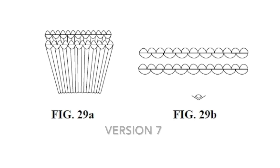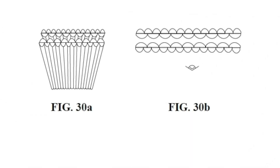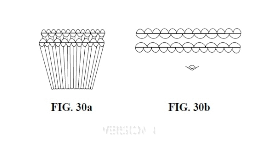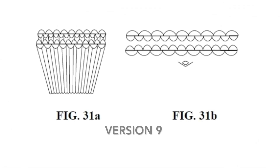Version 7 is two pairs of version 5s with one in front of the other — this corrects the orientation of the background and removes the multiple images. Version 8 places the larger lenses in the middle and the smaller lenses on the outside, with results visually similar to version 5. Version 9 places the smaller lenses in the middle and the larger lenses on the outside, with results visually similar to version 4.